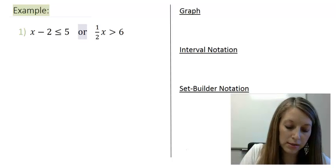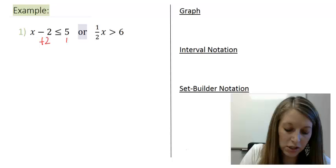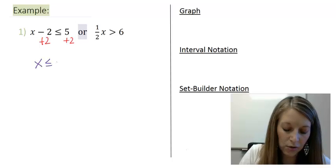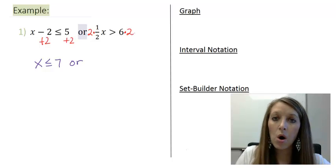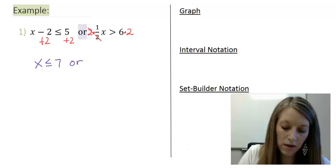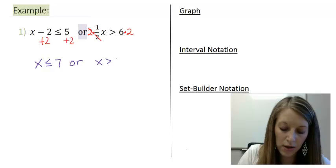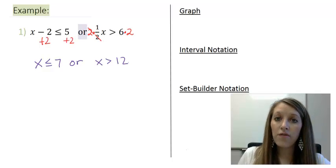So, these are pretty simple ones. To solve the left-hand one, I just add 2 to both sides. That leaves me with X is less than or equal to 7. Or, on my right, to get rid of that 2, let me multiply by the reciprocal. Or, multiply by 2 in itself to cancel it out. Gives me X is greater than 12.